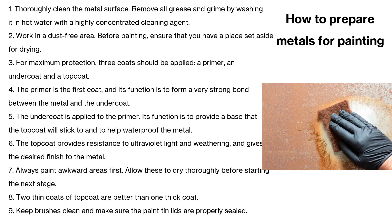Let's look at the process of how to prepare metals for painting. Firstly, you need to thoroughly clean the metal surface and make sure you are working in a dust-free area. For maximum protection, three coats should be applied: the primer, the undercoat, and the top coat. The primer is the first coat and its function is to form a very strong bond between the metal and the undercoat. The undercoat is applied to the primer. The top coat provides resistance to ultraviolet light and weathering, and gives the desired finish to the metal.